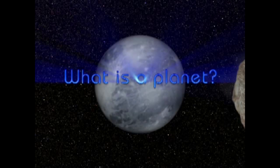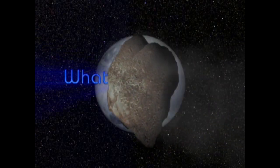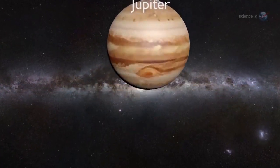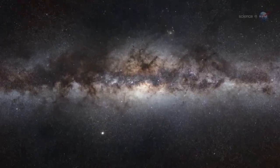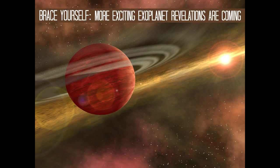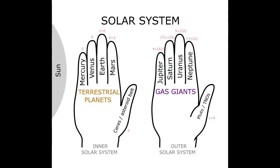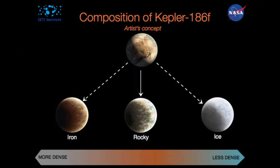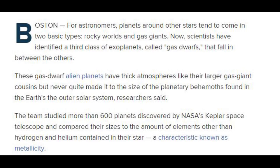What is a planet? Let's kick back and learn a little. We're going to mentally go to Boston and have some cream pie. For astronomers, planets around other stars tend to come in two basic types: rocky worlds and gas giants. But now, scientists have identified a third class of exoplanets called gas dwarfs that fall in between the others.